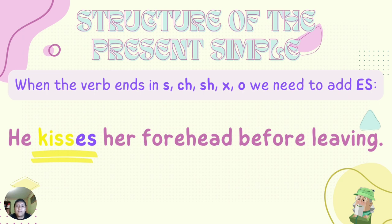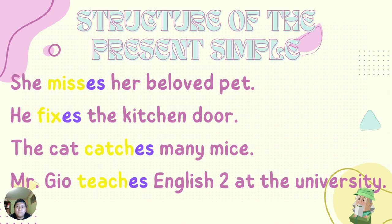When the verb ends in S, CH, SH, X, or O, we need to add ES. For example, he kisses her forehead before leaving — the base form is 'kiss,' but we add ES: 'kisses.' Here we have more examples: He misses her beloved pet. He fixes the kitchen door. The cat catches many mice. Mr. Gio teaches English at the university. In these verbs, we add ES.